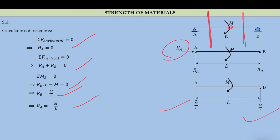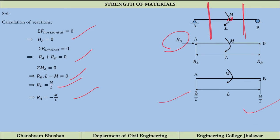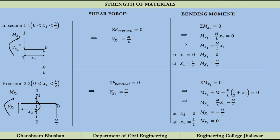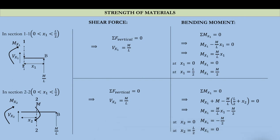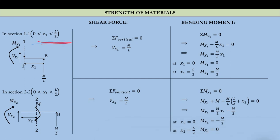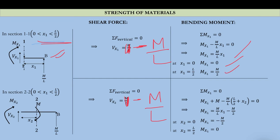There will be two sections because the loading conditions change at the midpoint. We take two different sections of half the length. For the first section, x1 changes from 0 to l/2 — taken between the midpoint and roller support B — and the shear force is minus m/L throughout. The bending moment at the roller support is zero, at the midpoint it is plus m/2, and in the span between the hinge support and midpoint it is minus m/2, while at the hinge it is zero.